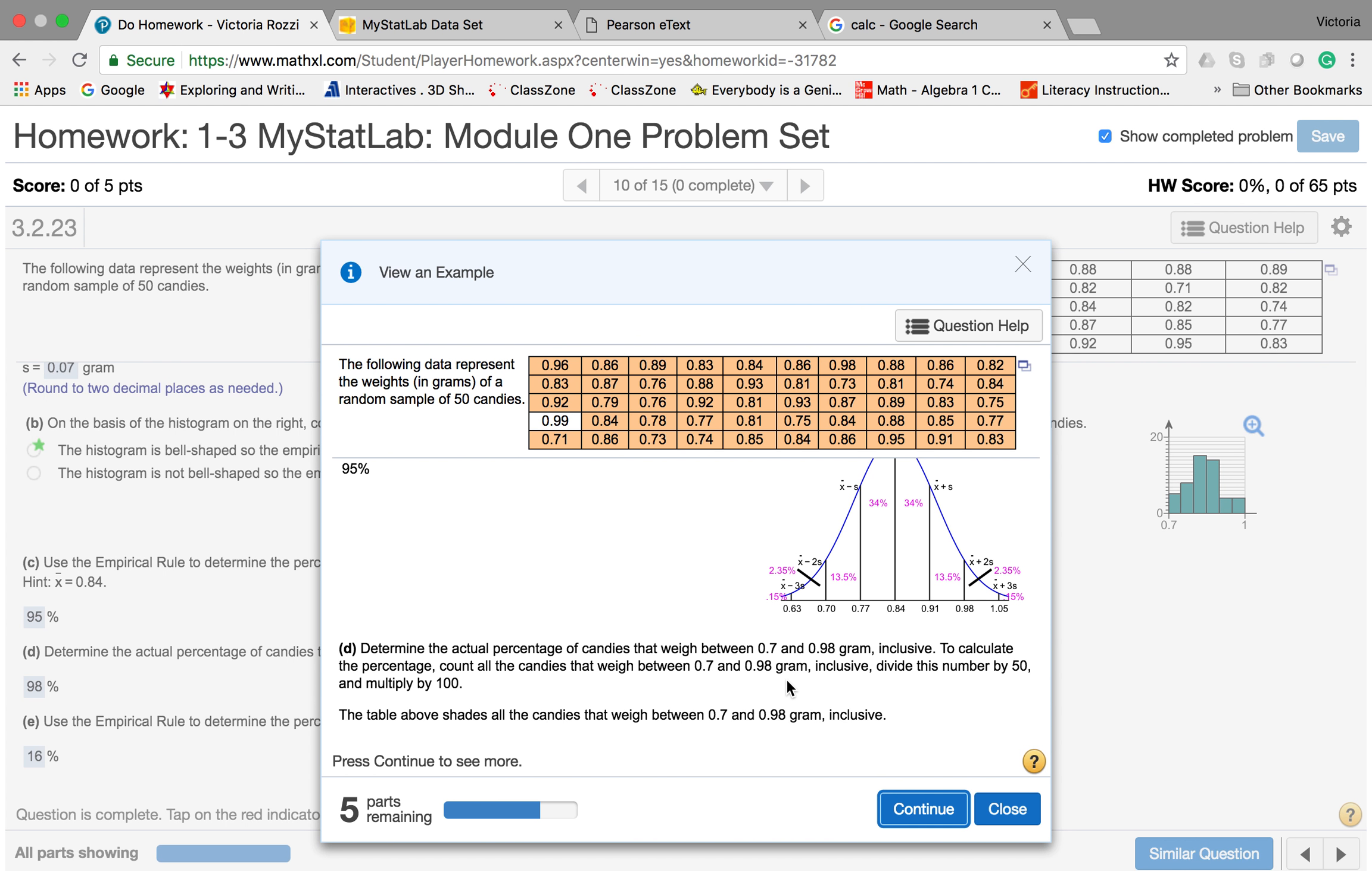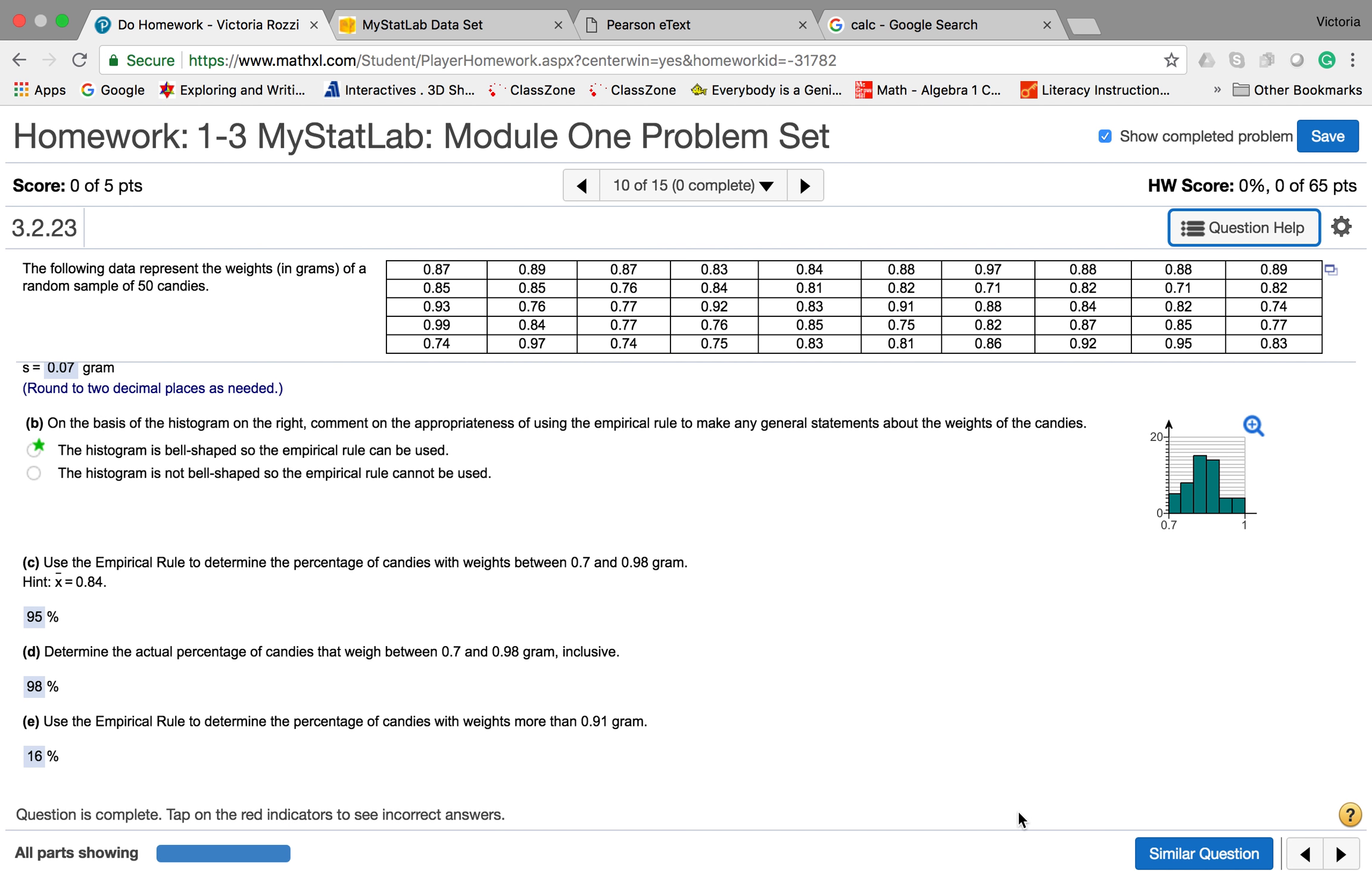Instead of using the empirical rule, which is going to get us, and of course in this case, because we're talking about being approximately normal, that means that the empirical rule is going to be fairly close, but it's not going to be perfect. What you're going to do here is you're going to add up. You're going to go through and you're going to say, is this one between 0.7 and 0.98? Yes, yes, yes, yes. And count them all up. Once you have the number that are between those two values, you're just going to go ahead and divide by 50. And this is going to get you 98% or 0.98 initially. So, we change that into a percentage.